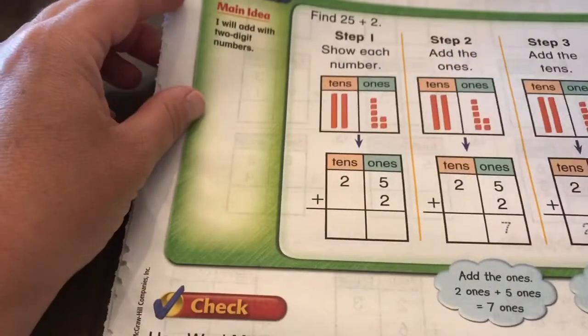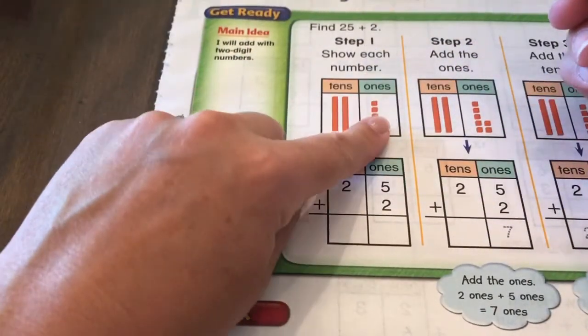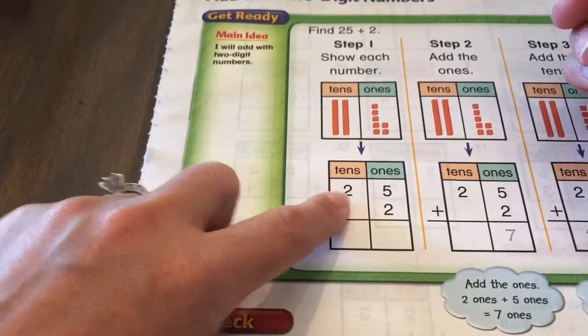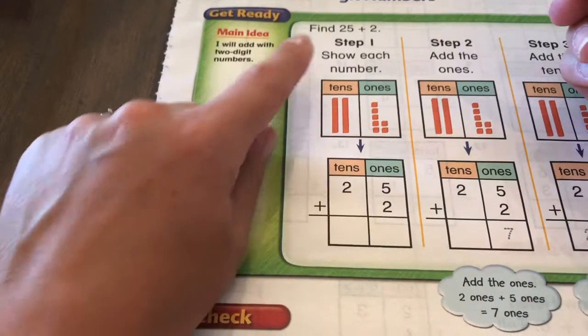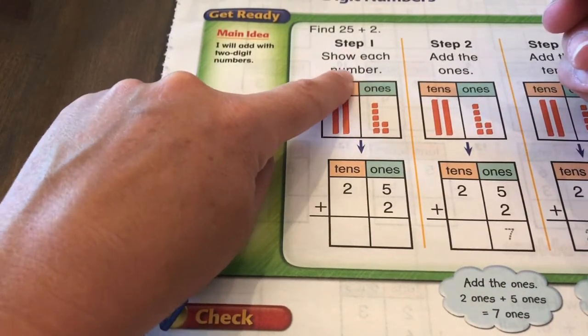So you're going to start by taking out your tens cubes and your ones cubes, and when you see a problem, you're first going to build it. It says step one, show each number.